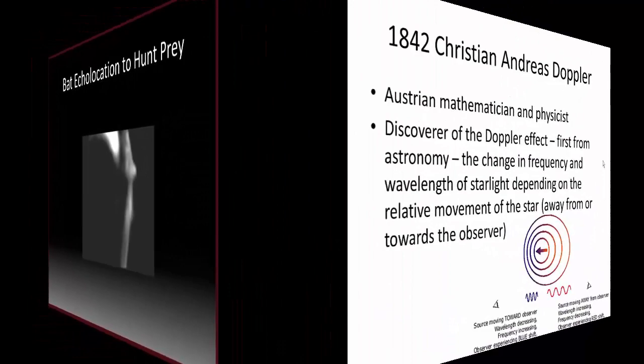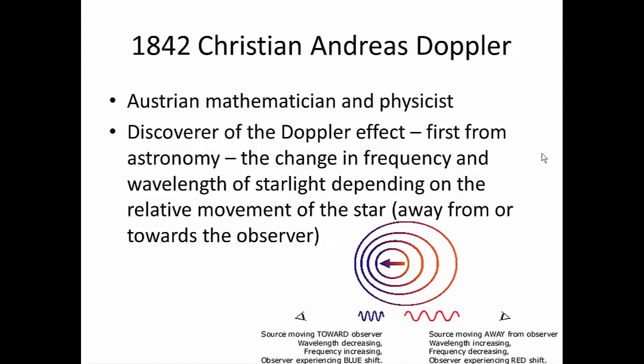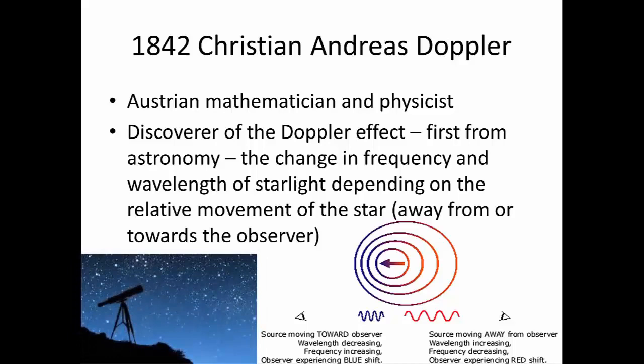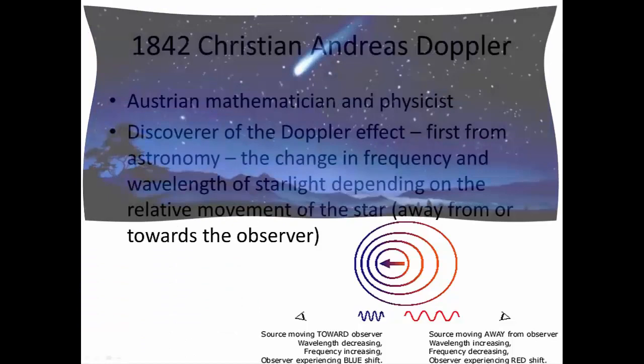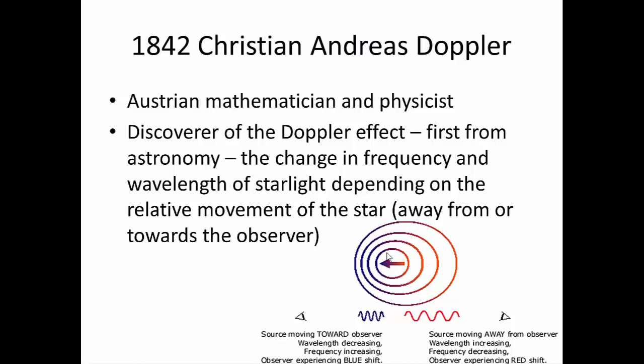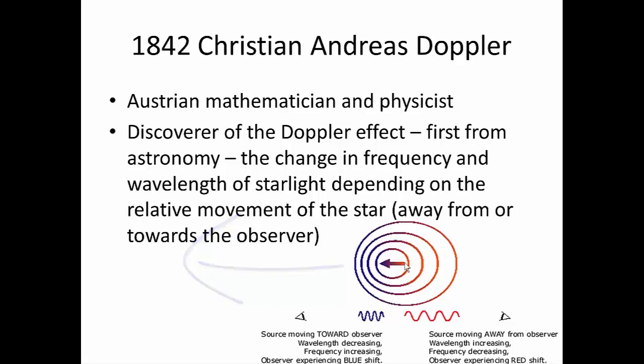Next in line is the Austrian mathematician and physicist Christian Andreas Doppler, the discoverer of the so-called Doppler effect. Originally it plays a major role in astronomy, because it describes the change in frequency and wavelength of starlight depending on whether the star you are watching is moving away from you or toward you. A star moving away will have a red shift effect, and a star moving toward you will have a relative blue shift effect — a longer wavelength and shorter frequency if moving away, and a shorter wavelength and increased frequency if approaching.